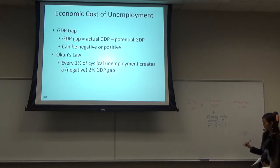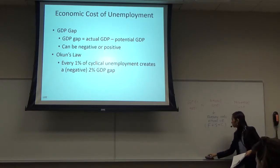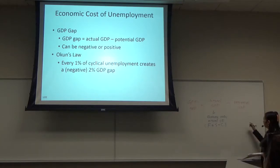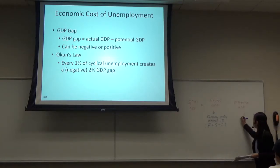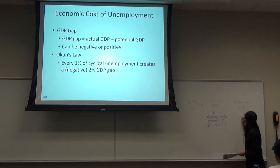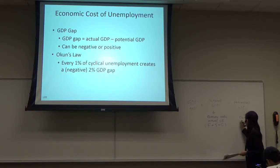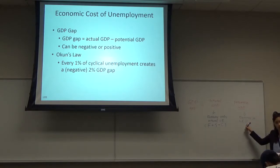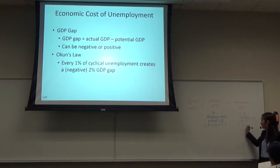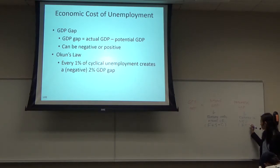And potential GDP is your economy operating at the natural rate of unemployment, which means frictional unemployment plus structural unemployment — and that's it.